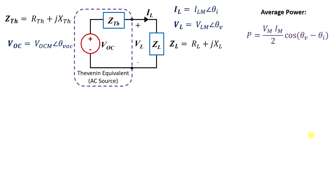Now let's look at the average power. This is the definition for average power. We're using the magnitude of the AC sinusoidal waveforms, not the RMS value — so the little m is the magnitude. We need the magnitude of the voltage and current that we care about, and also the difference between the phase of the voltage and the phase of the current. Once we have all those values, we can calculate the power. We're going to derive that equation by finding the values for the current and voltage at the load.